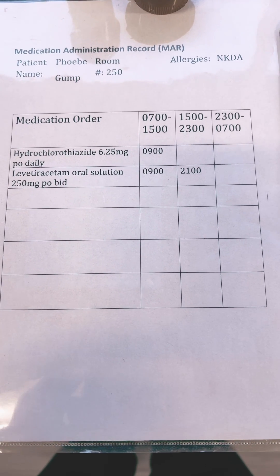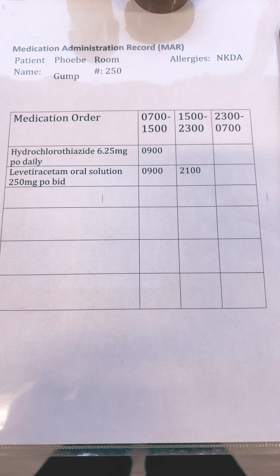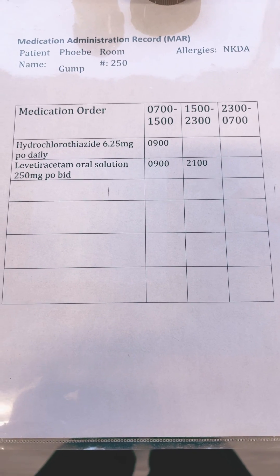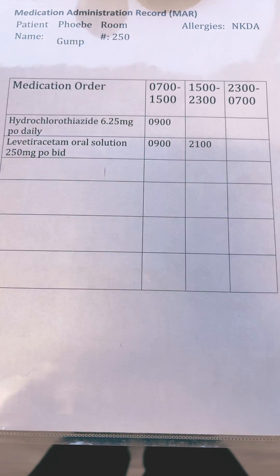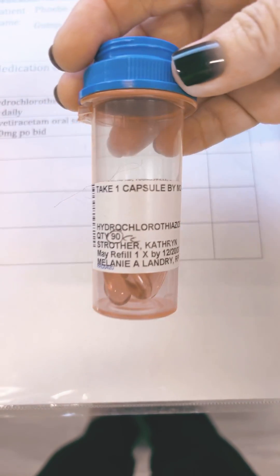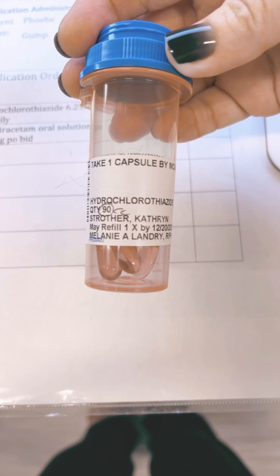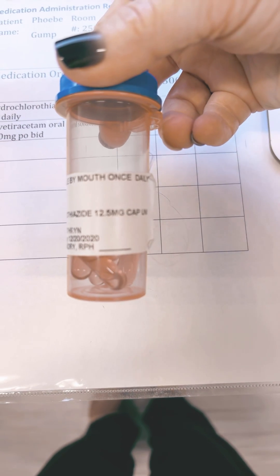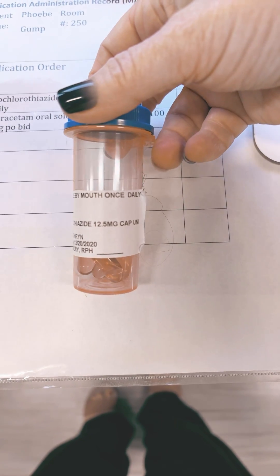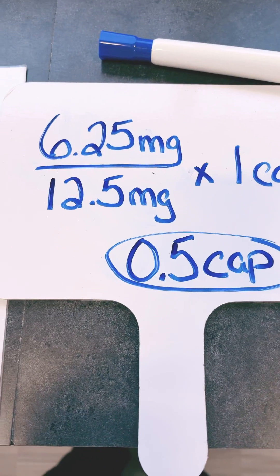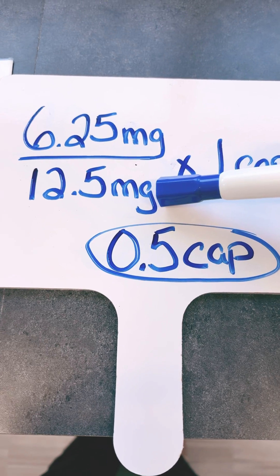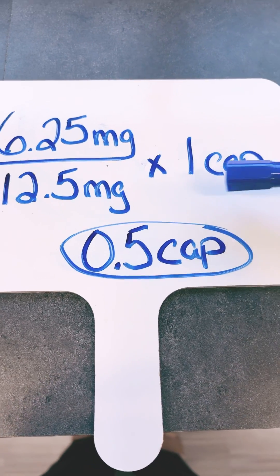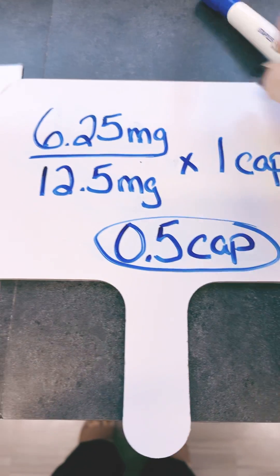Here's your patient Phoebe Gump in room 250, no known allergies. The first medicine she has is hydrochlorothiazide 6.25 milligrams PO daily. What we have available is hydrochlorothiazide 12.5 milligram capsule. The doctor wants 6.25, and what we have available is 12.5 milligrams times one cap, which gives you a half a capsule.